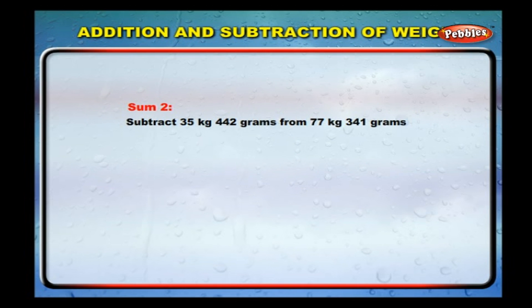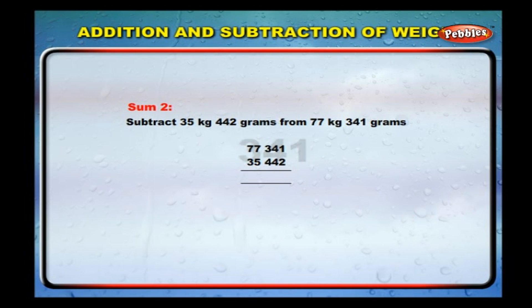Subtract 35 kilograms 442 grams from 77 kilograms 341 grams. Arrange the weights in columns: 77 kg 341 g minus 35 kg 442 g. We get 41 kilograms and 899 grams.